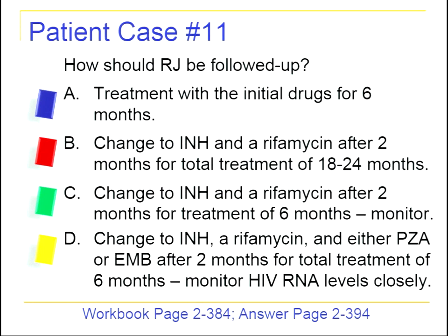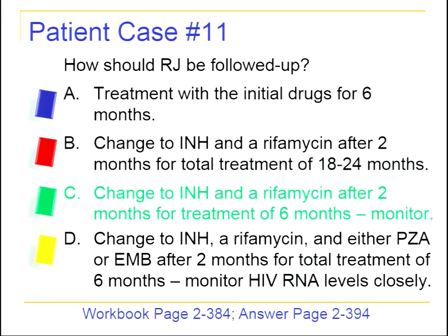For RJ's follow-up: after the initial two-month four-drug phase, change to two drugs (INH and rifabutin) to complete a total six-month treatment course. Monitor viral loads closely to ensure drug interactions are not negatively affecting HIV therapy. Correct answer: C — change to two agents after two months for total treatment of six months, monitoring closely.